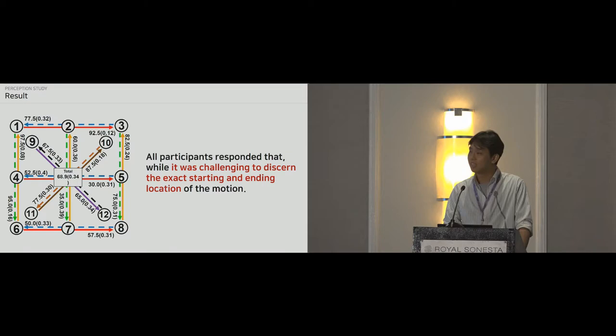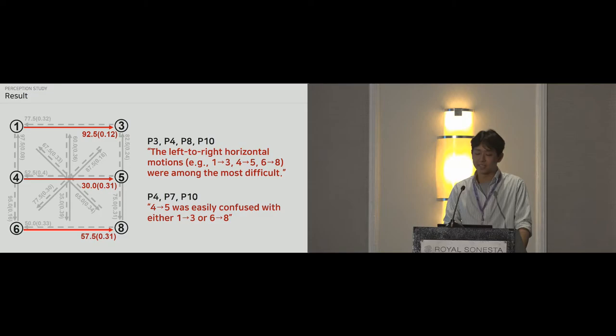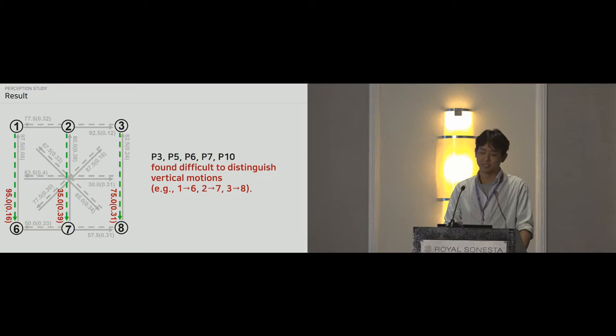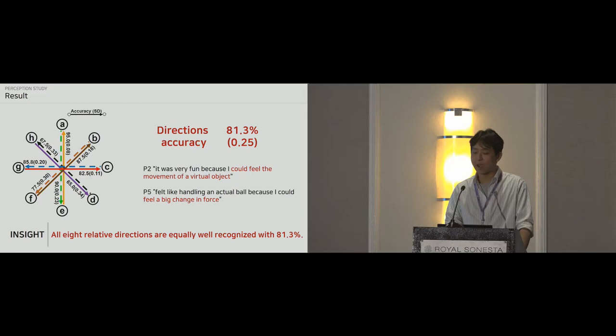Participants had an accuracy of 68% for the 60 motion paths. In the interview, all participants responded that it was challenging to discern the exact starting and ending location of the motion. For example, four participants said that the left to right horizontal motion was among the most difficult, and three participants responded that 4 to 5 was easily confused with either 1 to 3 or 6 to 8. Also, same in the vertical motions. However, when we only consider direction of the motion paths, all 8 relative directions are equally well-recognized with 81%.